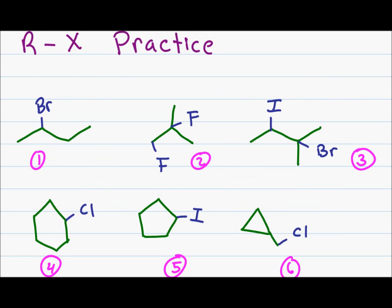Let's do some quick practice. In each of the molecules given, identify the primary, secondary, and tertiary alkyl halides. Number one: the carbon is attached to two other carbons — this is secondary. For number two, we have one fluorine on a primary carbon and the other fluorine on a tertiary carbon. For number three, we have iodine on a secondary carbon and bromine on a tertiary. Problem four: chlorine on a secondary carbon. Problem five: iodine is also secondary. Problem six: chlorine is on a primary carbon.